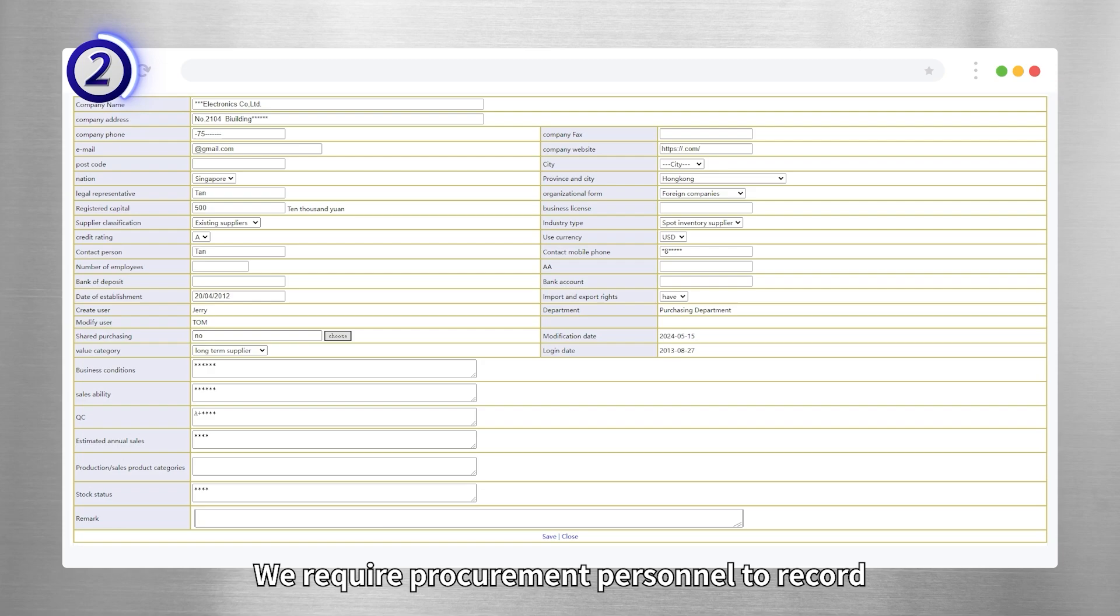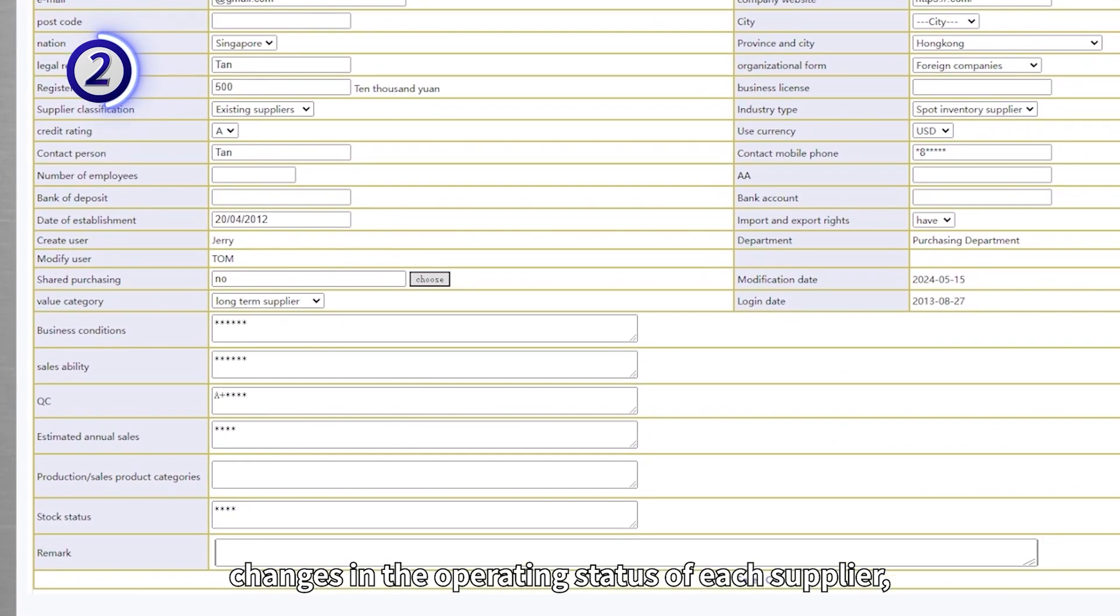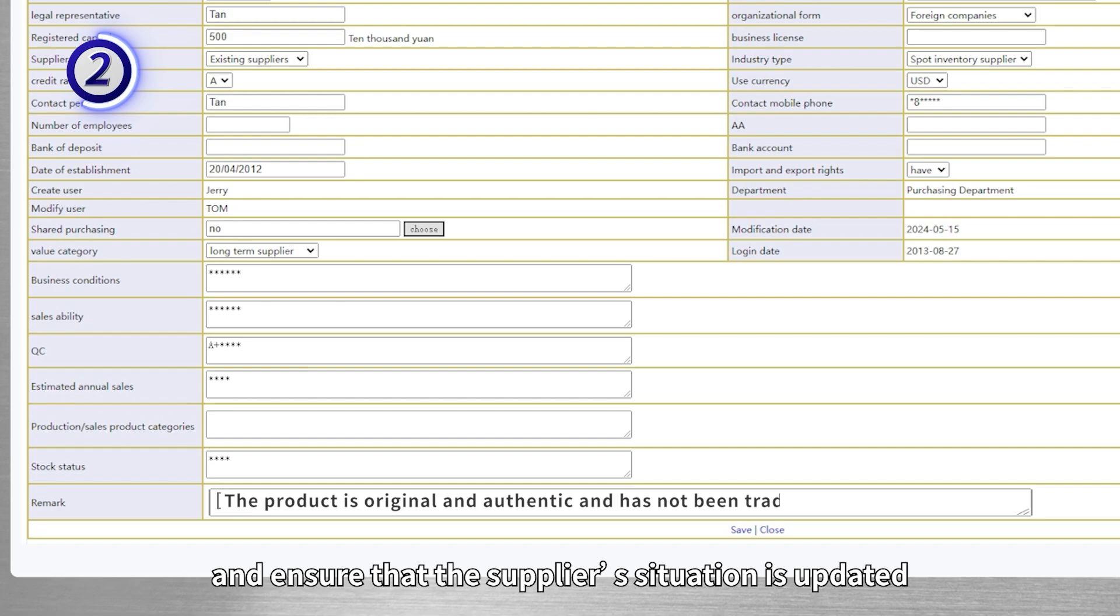However, not every supplier is reliable in the long term. We require procurement personnel to record the changes in the operating status of each customer's suppliers and enable control of the supplier situation.